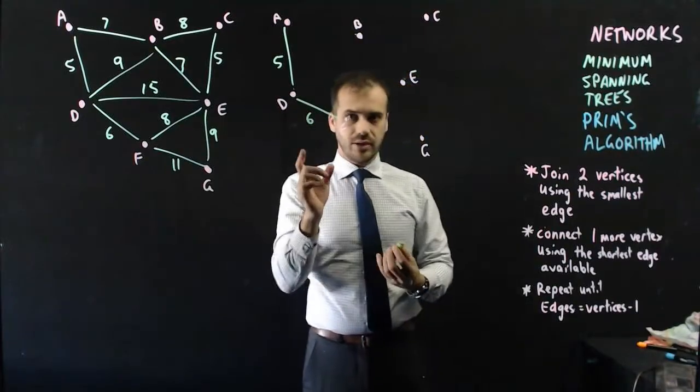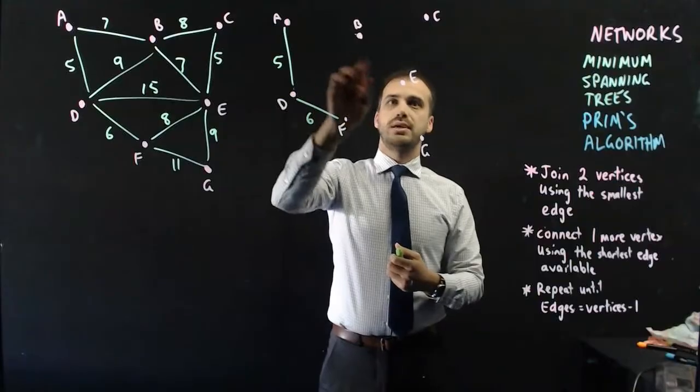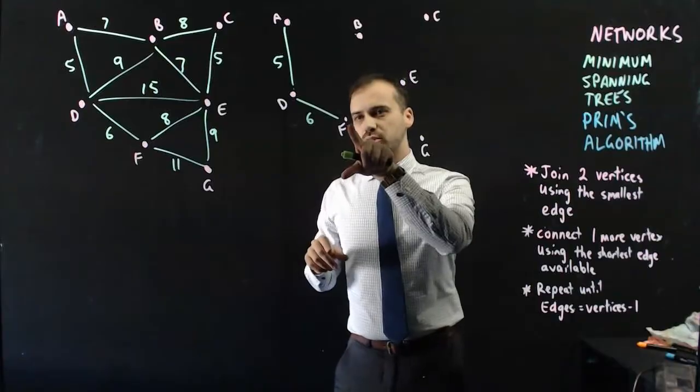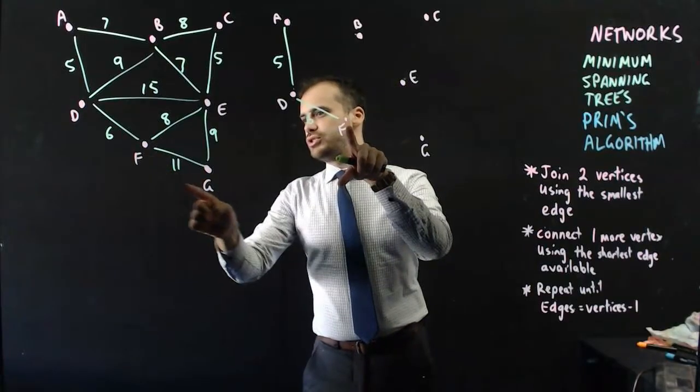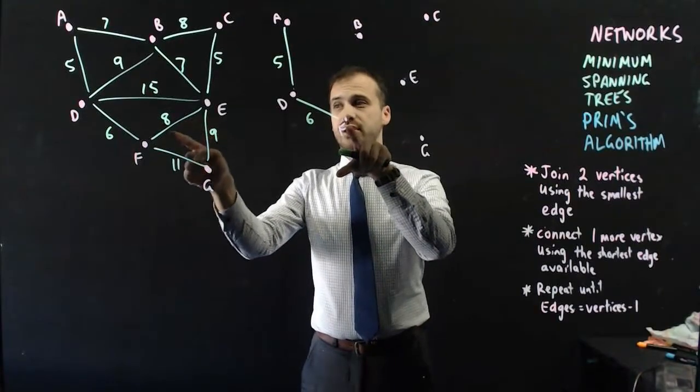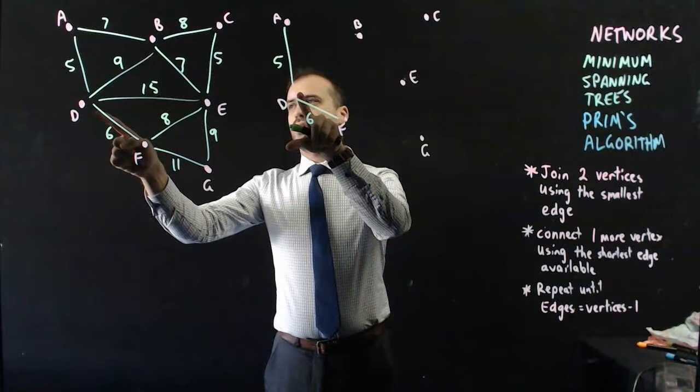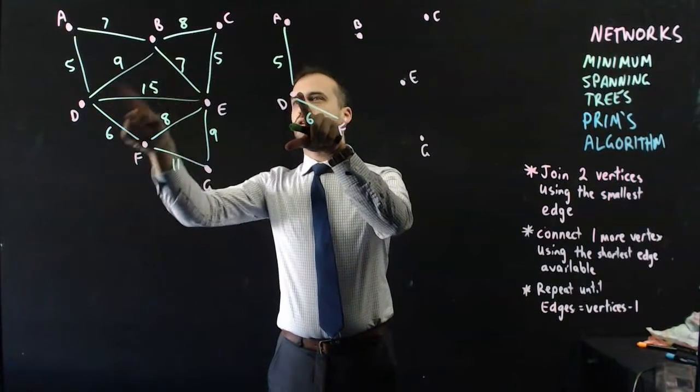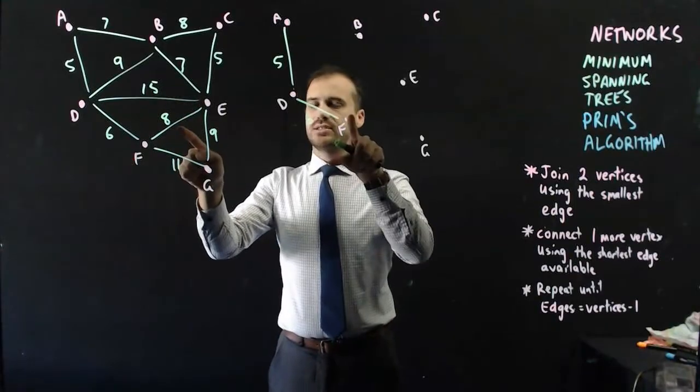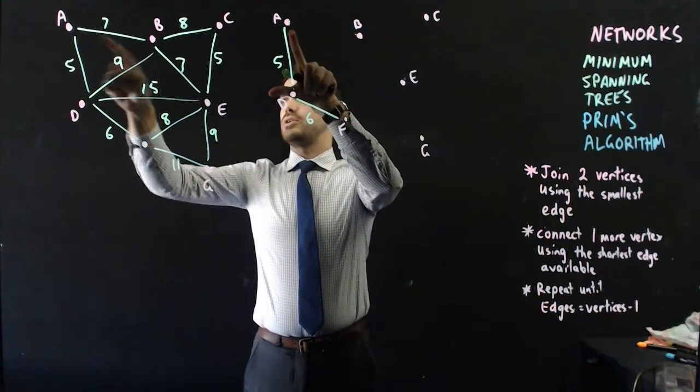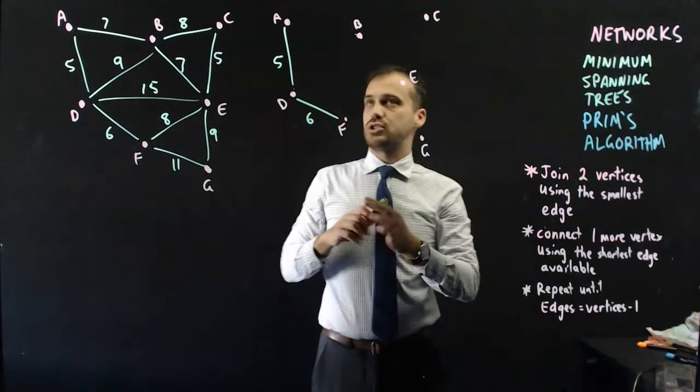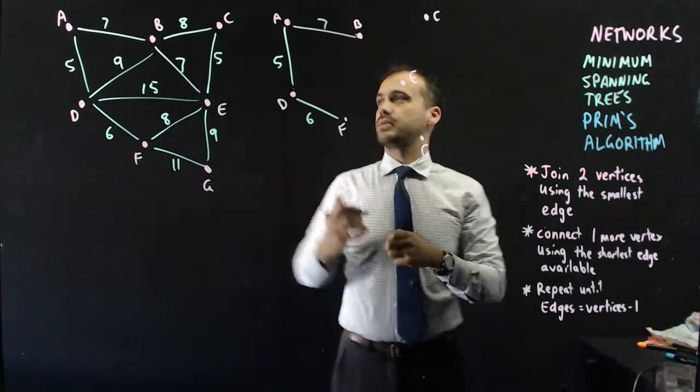Now, I need to connect A, D, and F to B, E, C, or G, one of those vertices. I could join F to G or E with an 8 or an 11. 8's the winner so far. I could join D to B with a 9 or E with a 15. 8's still the winner. I could join A to B with a 7. Wait a minute. 7's better than 8, so let's use 7. Let's join A to B with a 7.